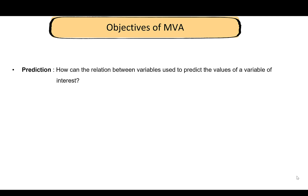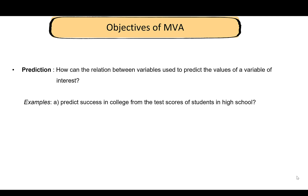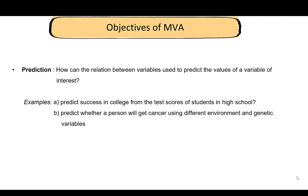Then there is prediction — if there is a relationship between variables, can you use that relation to predict values of a variable of interest? For example, can we predict a student's success in college based on high school test scores? Or can we predict whether a person will get cancer using genetic and environmental variables? This is a very important multivariate problem, though we will not focus on it in this course.